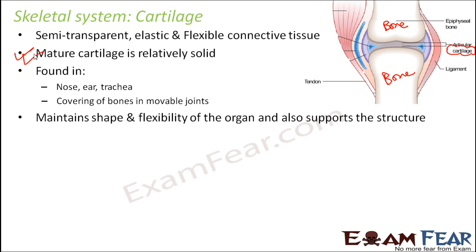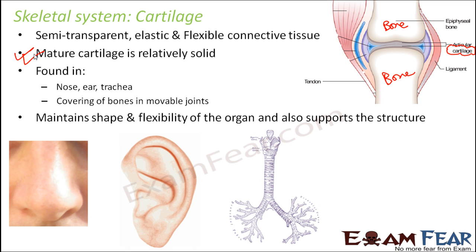We do not find cartilage everywhere, but in certain specific parts of our body — for example, the nose, ear, and trachea. The cartilage present in the ear is very easily visible.